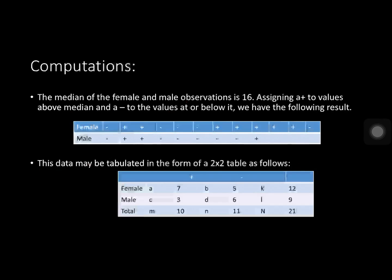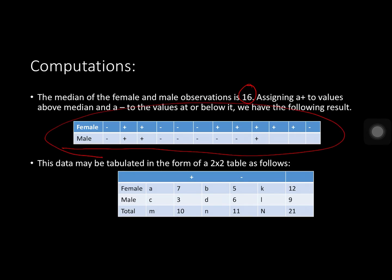For our computations, the median of the female and male observations combined is 16. Assigning a plus to values above 16 and a minus to values at or below it, we get the following results. This data may be tabulated in the form of a 2 by 2 table, which also explains our degrees of freedom.